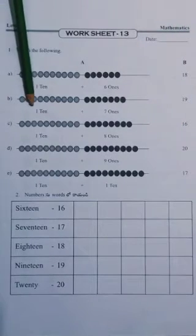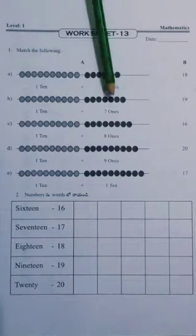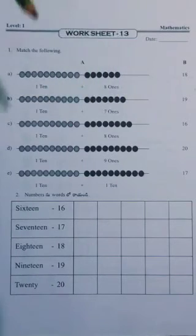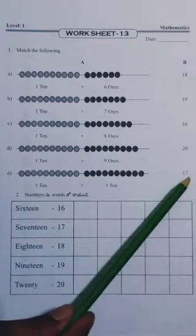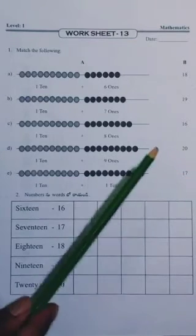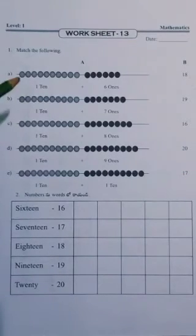Next, here is 1 ten plus 7 ones. 1 ten plus 7 ones is 17. Here is the 17.